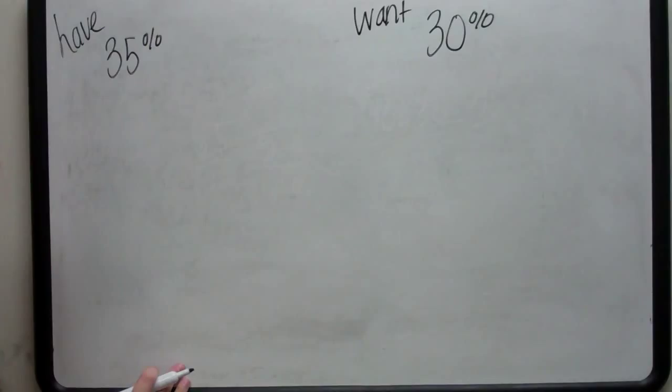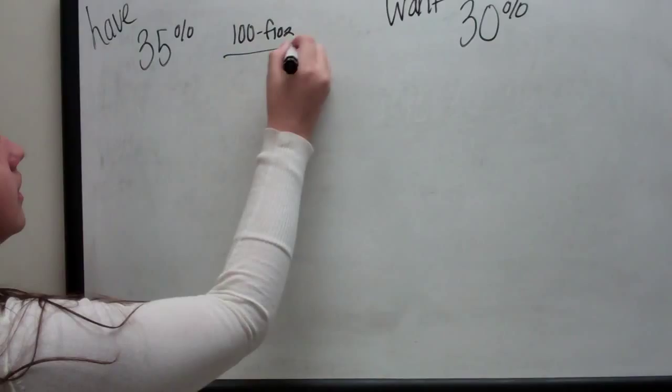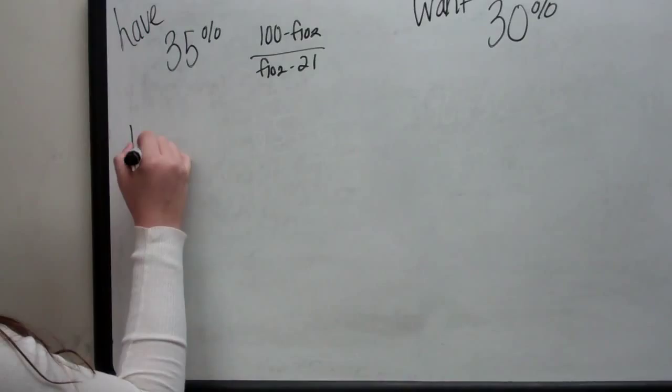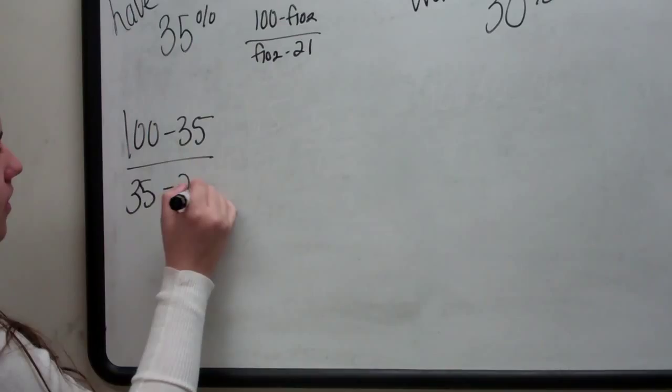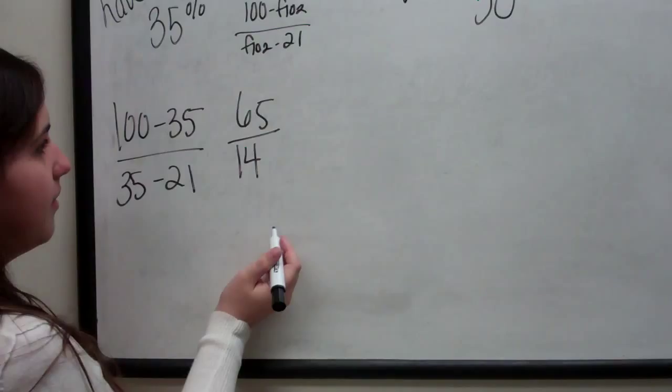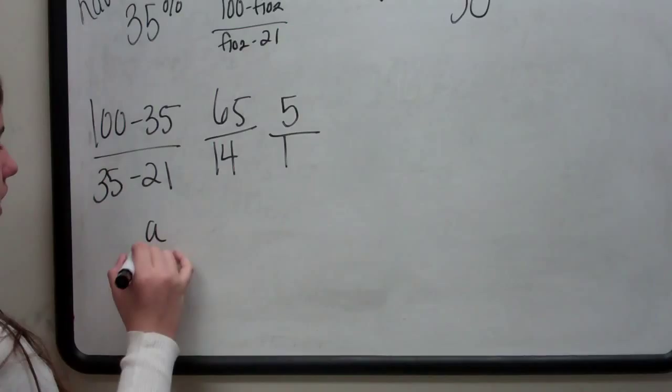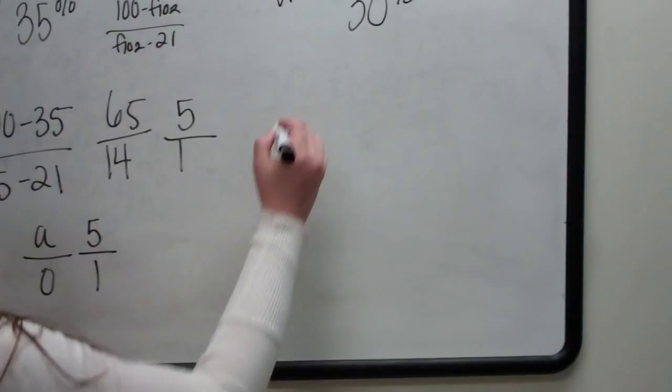So in order to find my air to oxygen ratios, I'm going to do the formula 100 minus FiO2 divided by FiO2 minus 21. So to find 35%, I do 100 minus 35 divided by 35 minus 21, which gives me 65 divided by 14. 65 divided by 14 is 5 to 1. So for 35%, I got an air to oxygen ratio of 5 to 1.